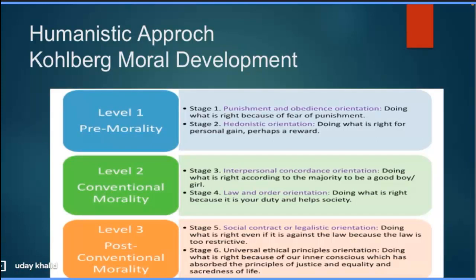Then comes conventional morality. The third stage is interpersonal concordance orientation — doing what is right according to the majority, to be a good boy or girl. The fourth stage is law and order orientation — right is right because it is legal, doing what is right because it is your duty and helps society.